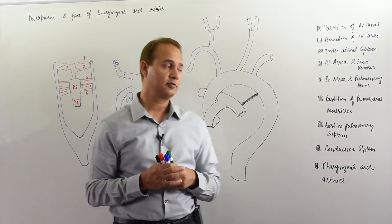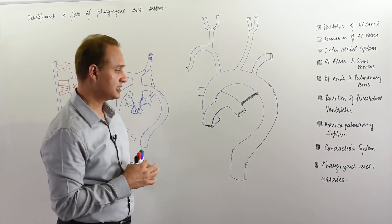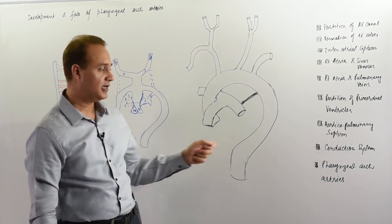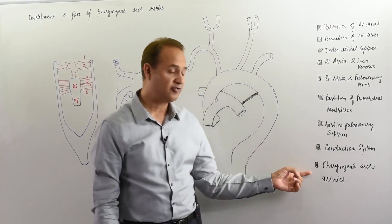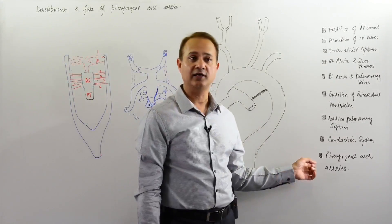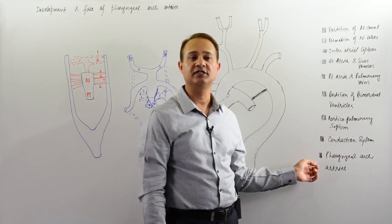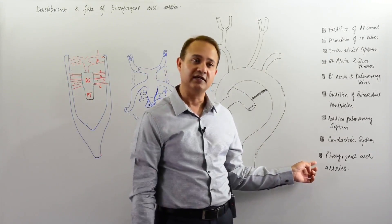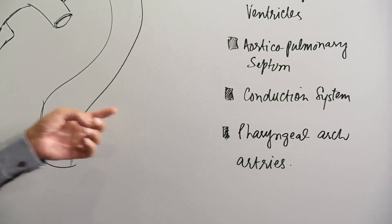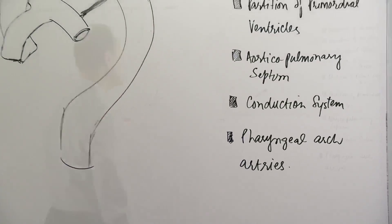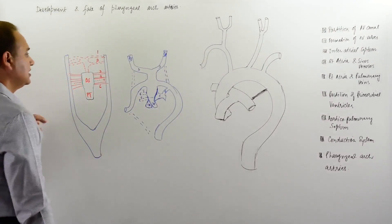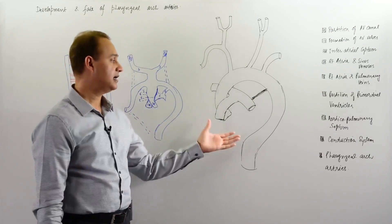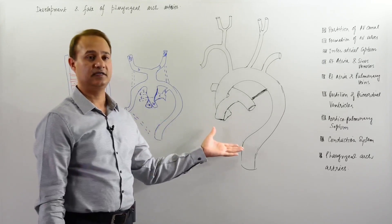This is Mobin. We are talking about the cardiovascular system of biology. The lecture today is about the pharyngeal arch arteries and their fate — what will happen to them. Let's look at the final structure first, understand what will develop, and then go back to where it started and how it happens.